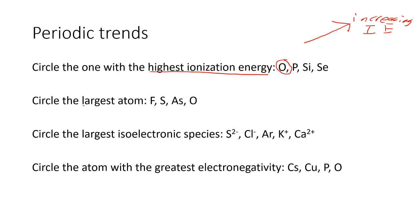Now we're going to look at our second property: finding our largest atom by comparing atomic radius. Remember that for atomic radius, it goes in the opposite direction — we get really large as we go towards the bottom and the left. This is related to the fact that you're adding additional electron shells as you go further down, and as you go towards the left side of the periodic table, you have a weaker effective nuclear charge, meaning you're not pulling those electrons in as tightly, making your atom larger.